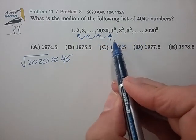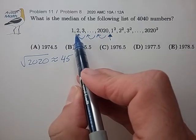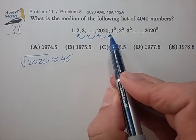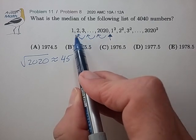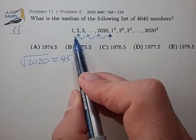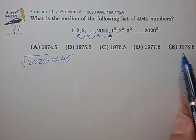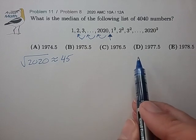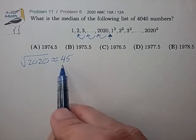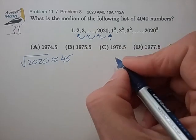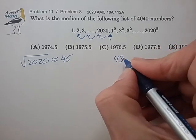So 45 of these numbers are going to be tucked under 2020, and will push the median down by roughly 45 slots, give or take. And that seems to match up the answer choices, so I think we're on the right track there. So let's calculate a few squares around 45 so we can pin this down.